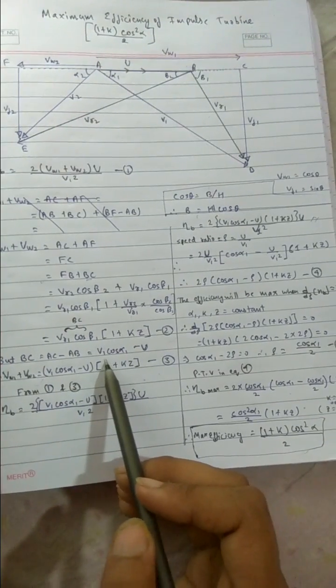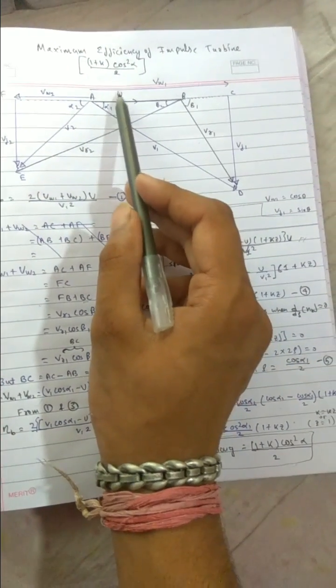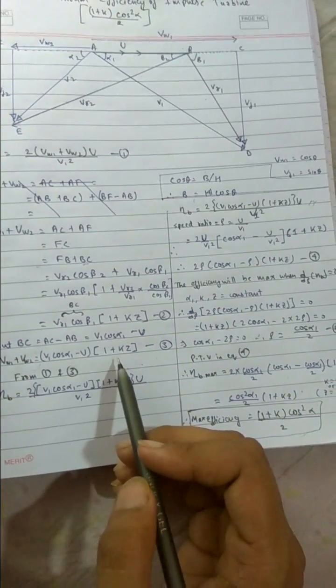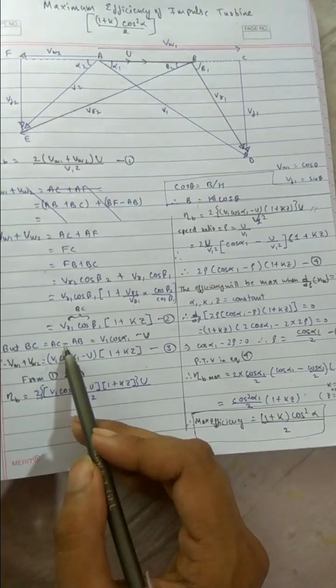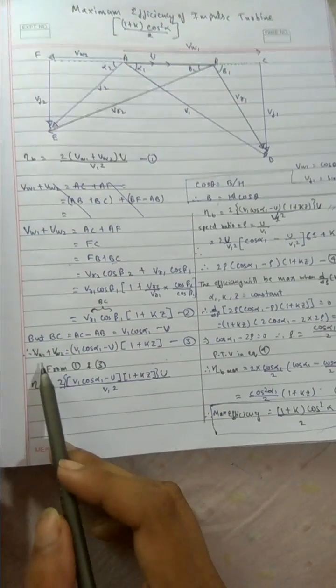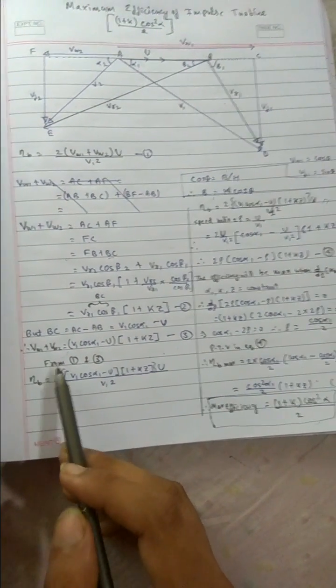And angle is alpha 1 for this big triangle. So V1 cos alpha 1. AC in place of AC we wrote V1 cos alpha 1. And AB, this is our AB. The value for AB is U. Writing it here, this is a minus sign. So we got the value of VW1 plus VW2.